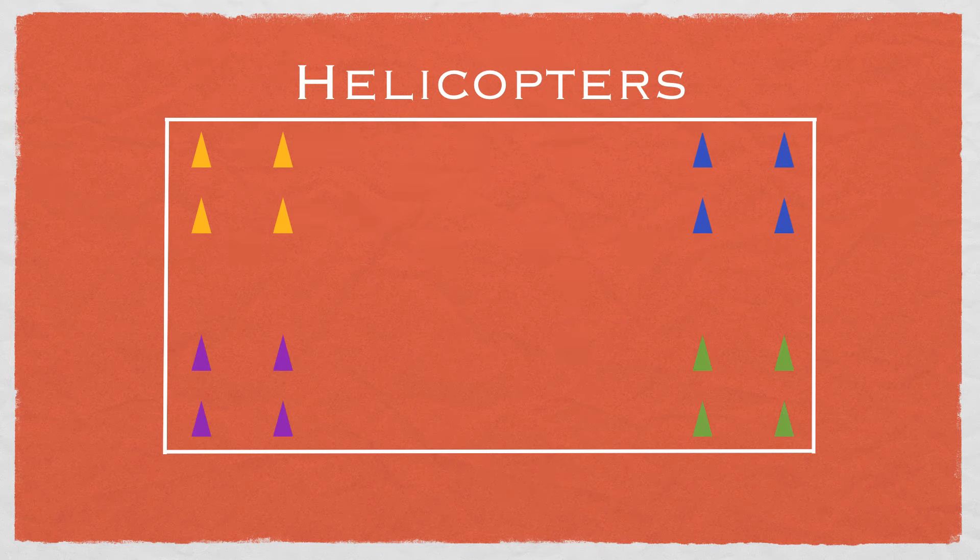To start, place down your cones. You'll have four different colors, four of each. These are the helipads or landing zones for the helicopters.